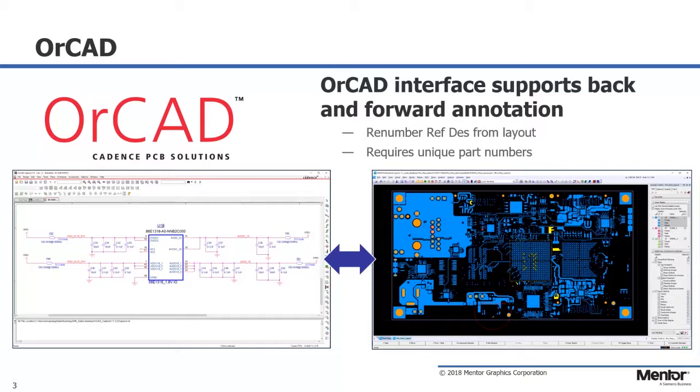So what is supported in the ORCAD interface? Forward and back annotation with user-defined placement groups to drive PCB placement. This is done by property. You can renumber reference designators from layout and back annotate that information to the schematic. All that is required to drive PADS Professional from ORCAD is a unique part number.